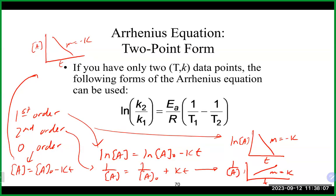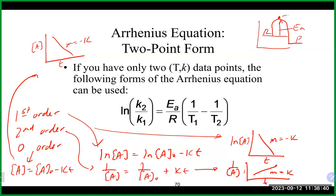We then discussed temperature and its effect on the rate constant. As you increase temperature, you add more energy, which gives a greater proportion of molecules sufficient energy to overcome the activation energy barrier — the 'hill' the reactants must climb to reach the other side. At the top of that hill is our transition state.